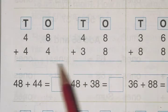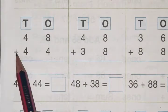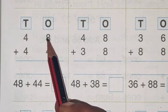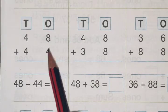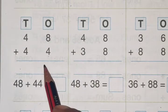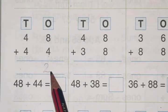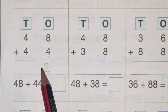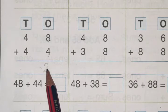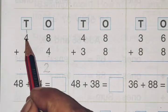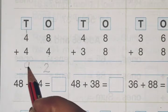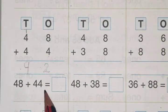Now let's see one more question: 48 plus 44. Now 8 and 4 is ones place. 8 plus 4 is equal to 12. 4 plus 4 plus 8 plus 1 is 9. So your answer is 92. 48 plus 44 is 92.